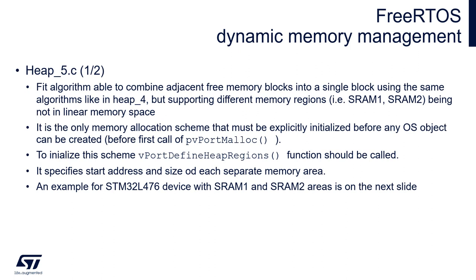The last memory management scheme, heap5, is used when the MCU has RAM areas not visible as a continuous memory space. It uses the First Fit algorithm and is able to combine free memory blocks into a single block using the same algorithm as heap4, but supports different memory regions that are not in a linear memory space. It is the only memory allocation scheme that must be explicitly initialized before any operating system object can be created — that is, before any first call of pvPortMalloc. To initialize this scheme, we need to call the function vPortDefineHeapRegions, which specifies the start address and size of each separate memory area dedicated as heap.